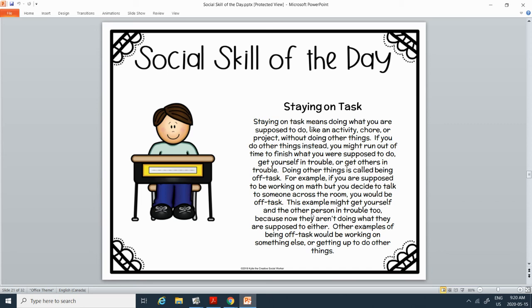For example, if you were supposed to be working on math, but you decided to talk to someone across the room, you would be off task. This example might get yourself and the other person in trouble too, because now they aren't doing what they're supposed to be either. Other examples of being off task would be working on something else or getting up to do other things.